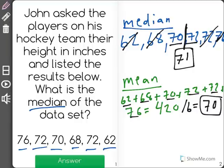And the last measure of center is the mode, and the mode is just the number that shows up most often in the data set. So looking back,